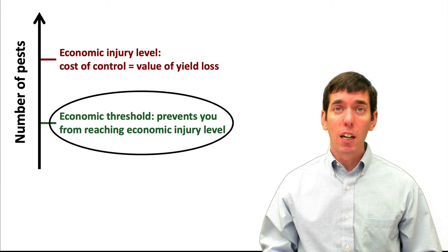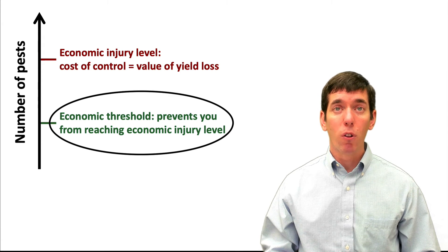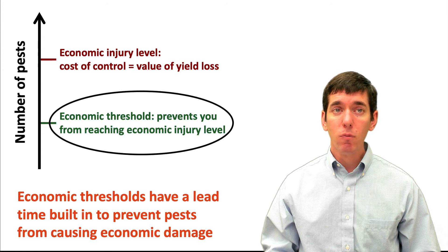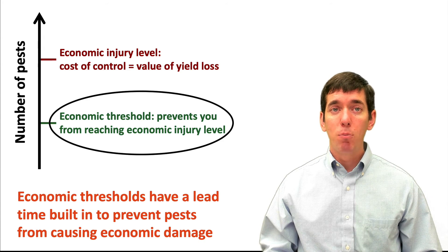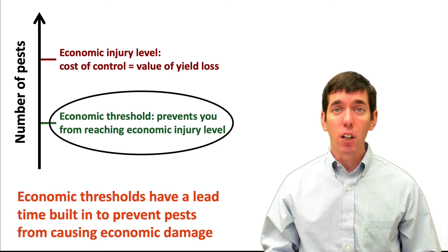When you look in extension recommendations or in pest management recommendations from another source, the economic threshold is the level that will be reported and that you're recommended to take action on. But this level is based on that break-even point — the economic injury level. Because of this, economic thresholds have a lead time built in that's going to prevent pests from causing economic loss based on the injury.